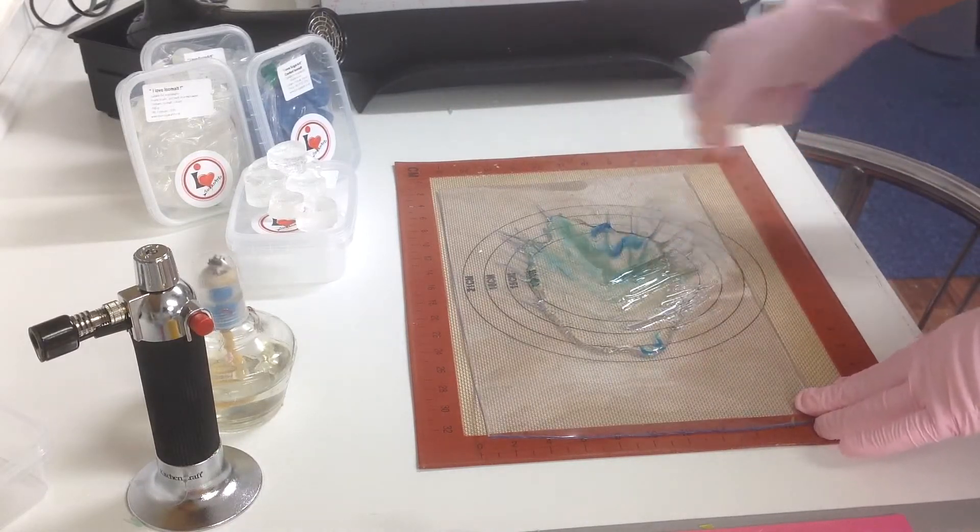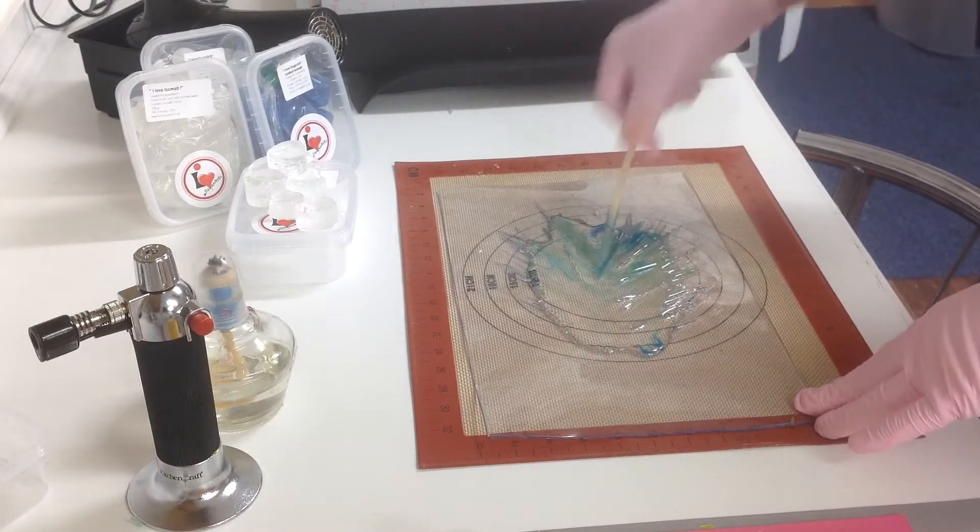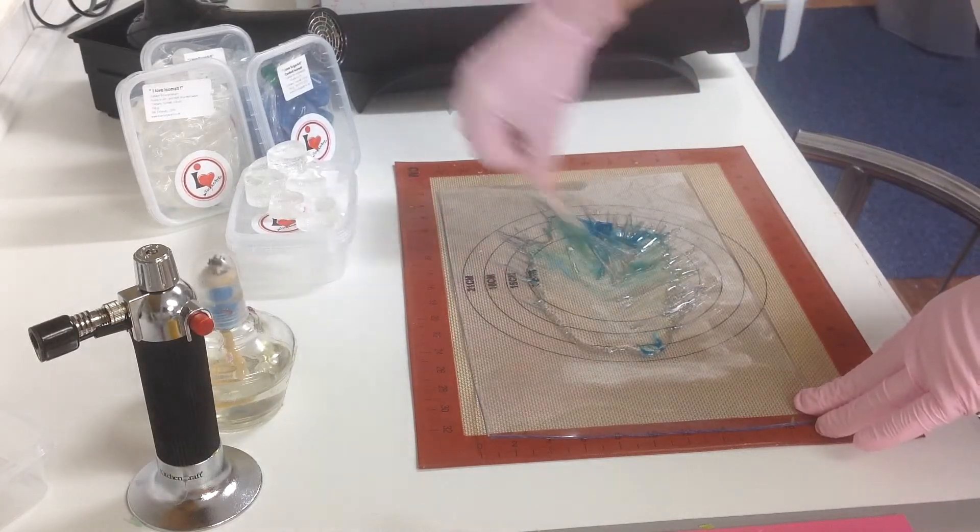Make sure you wear gloves when you work with isomalt or hot sugar. You don't really want to burn your fingers.